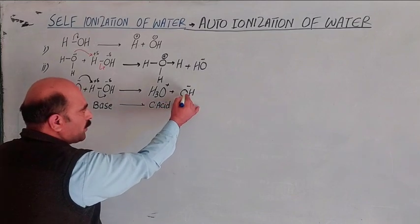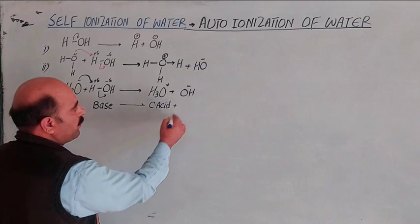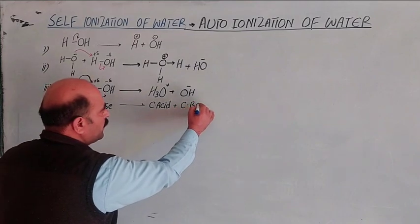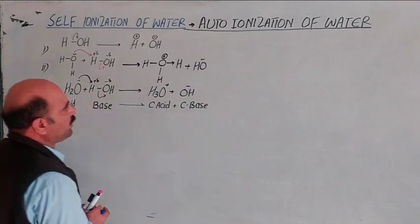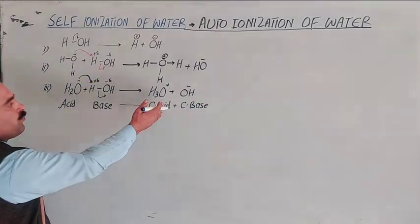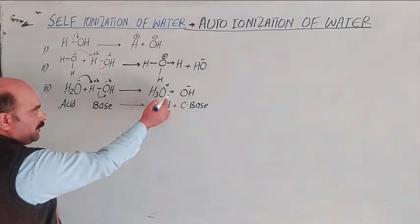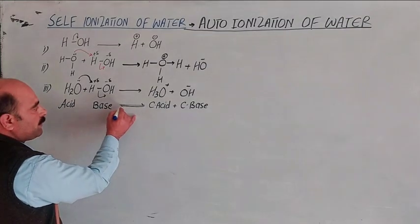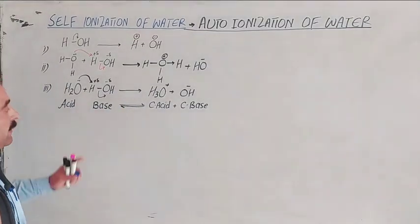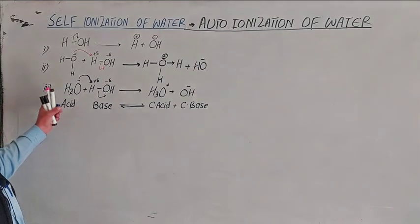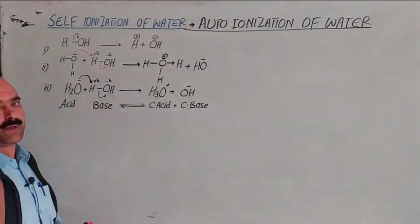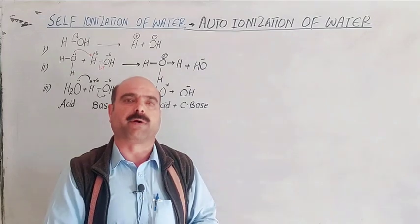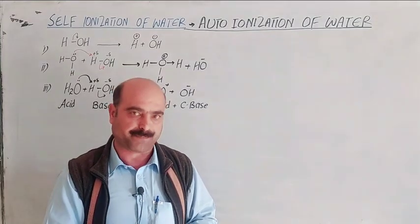The proton acceptor species is a base, so this is a conjugate base. This is the self-ionization of water, also called auto-ionization of water. The process of formation of ions is called ionization. Water plays a double role — it acts as both a proton donor and proton acceptor.